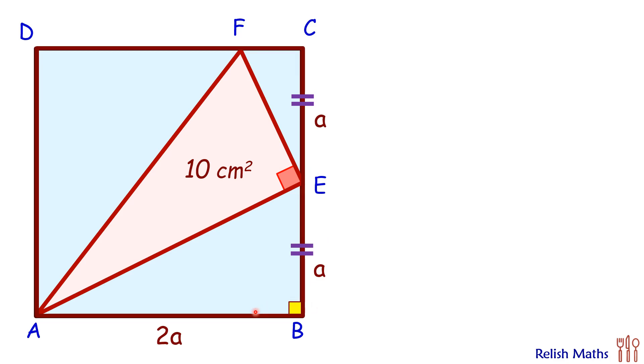Now if you look at triangle ABE, it's a right-angle triangle. Applying Pythagoras theorem, we'll get AB² plus BE² equals AE². Putting the values, (2A)² plus A² equals AE². Solving it, we'll get the length of AE as √5A.